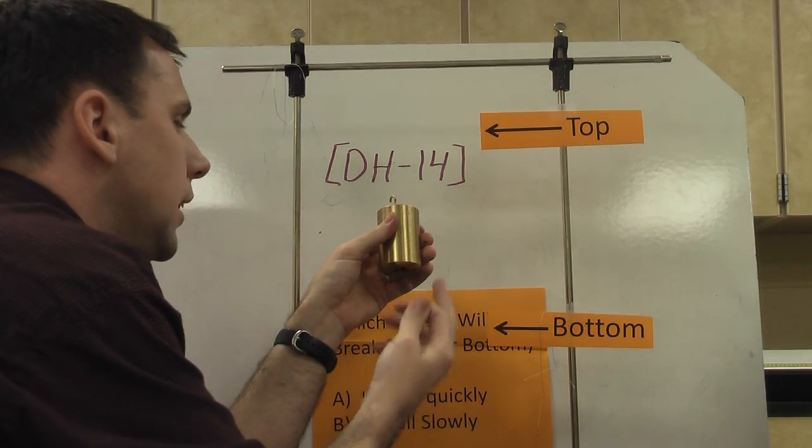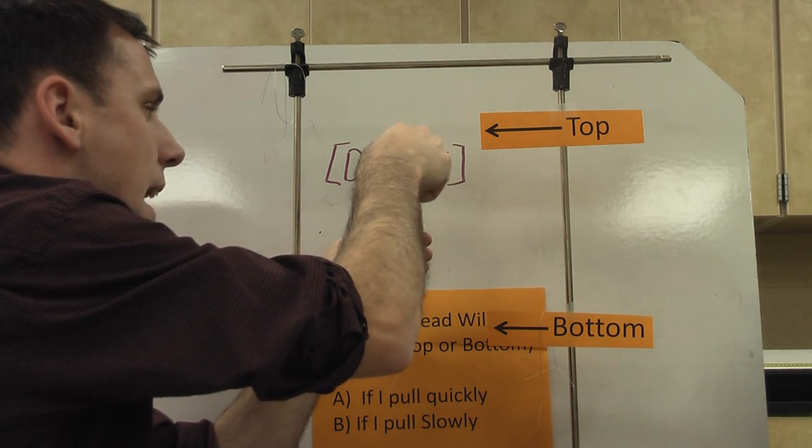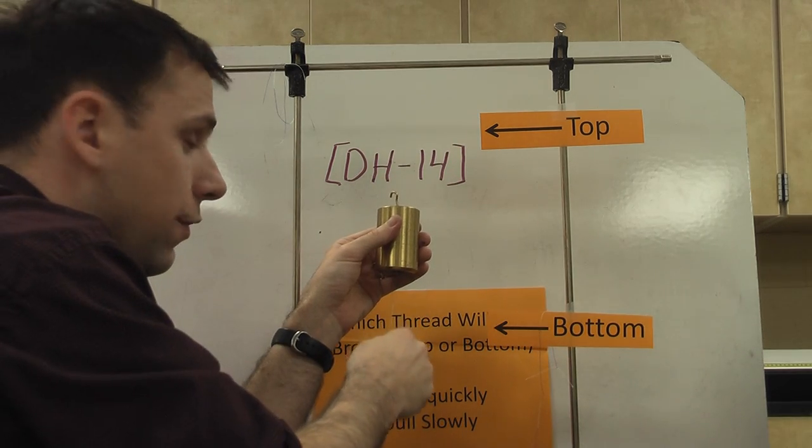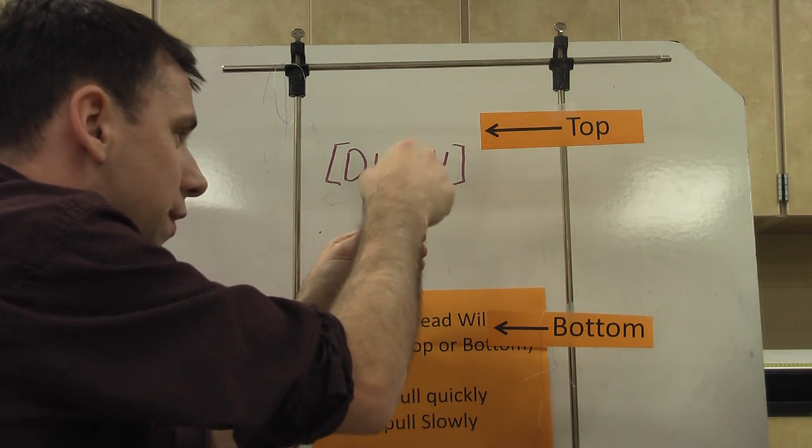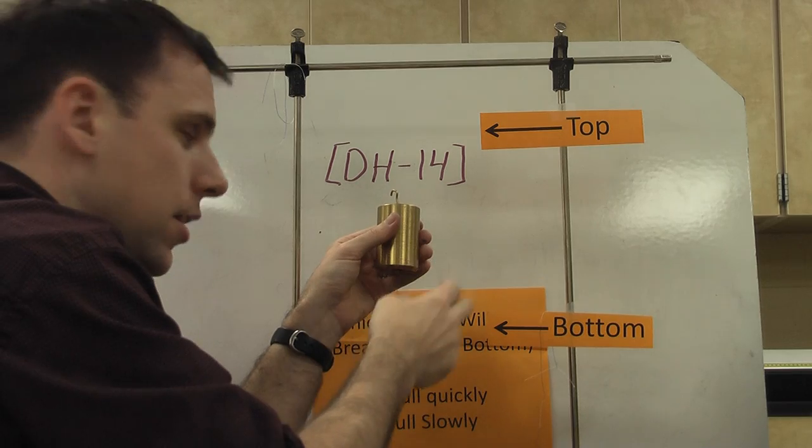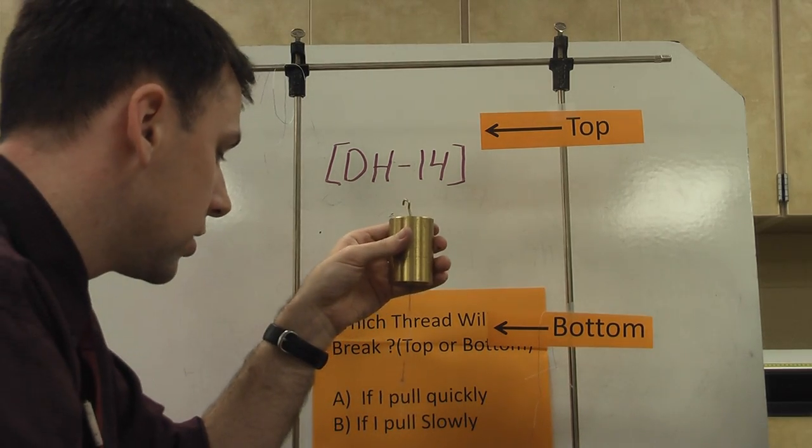So if you pull slowly, then this tension has to feel both the mass from here and the force you're pulling. But if you pull very quickly, it's mainly going to feel just the weight because this won't accelerate down that much because you've done it so quickly. By the time it actually gets going, you've already broken the string.